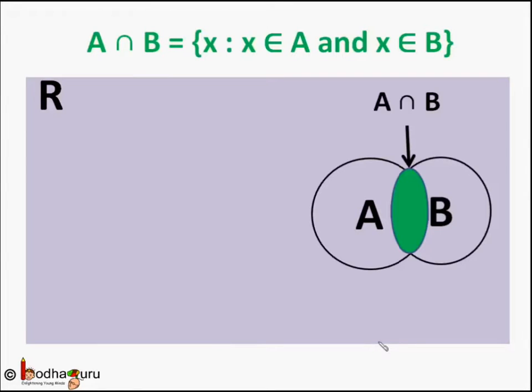So to summarize. The intersection of two sets A and B is represented as A intersection B. Which is a set that contains all the common elements between set A and set B. That is all the elements that are present in set A and also present in set B. That's all for now. Bye-bye.